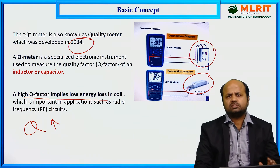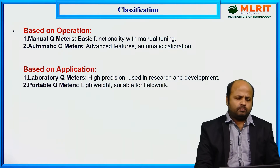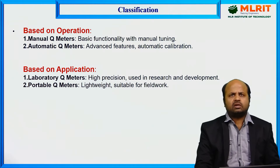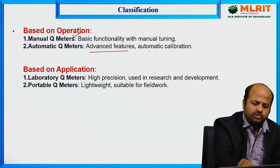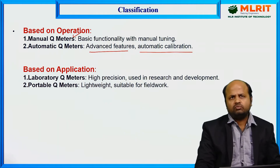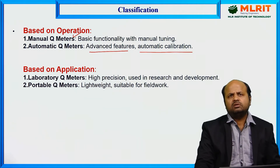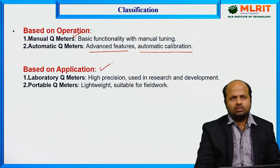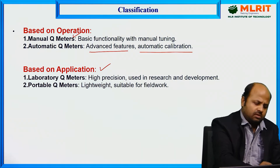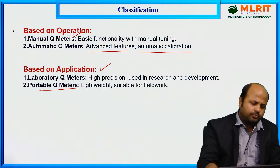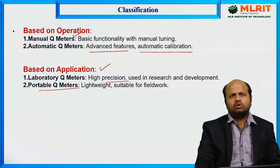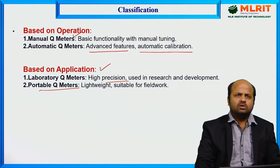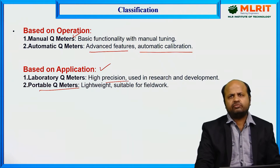A Q-meter measures the quality of an inductor or capacitor. Based on operation, we can classify the Q-meter as a manual Q-meter, which has basic functionality with manual tuning, and an automatic Q-meter, which has advanced features with automatic calibration. Based on application, we have laboratory Q-meters, which are highly precise and used in research and development, and portable Q-meters, which are lightweight and suitable for fieldwork.